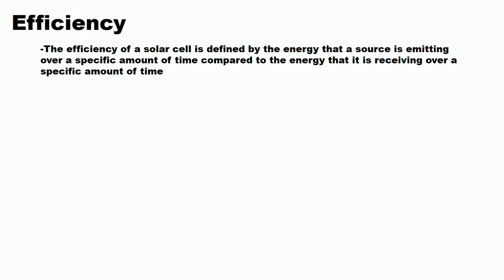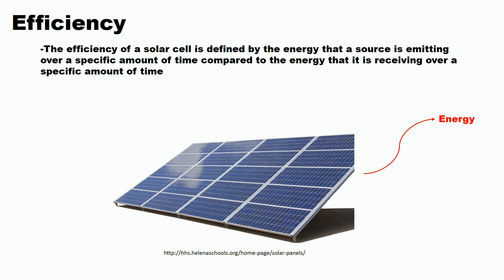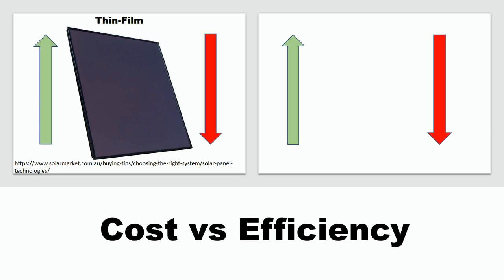The efficiency of a solar cell is defined by the energy that a source is emitting over a specific amount of time compared to the energy that it is receiving over a specific amount of time. While thin film solar panels are the least expensive, they also turn out to be the least efficient of the three types.